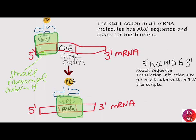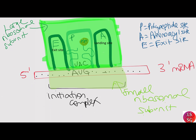In eukaryotes, the situation is a little bit different. Instead of binding to the Shine-Dalgarno sequence, the eukaryotic initiation complex recognizes the 7-methylguanosine cap at the 5' end of messenger RNA. The ribosome moves to the 5' cap with the help of cap-binding protein and initiation factors, then scans the messenger RNA in the 5' to 3' direction searching for the AUG start codon. According to the Kozak rule, the nucleotides around the AUG indicate whether it is the correct start codon. Once the AUG codon is identified, the other proteins and cap-binding protein dissociate, and the large 60S subunit binds to the complex of initiator transfer RNA, messenger RNA, and the 40S subunit, completing the initiation step in eukaryotes.